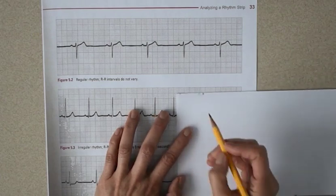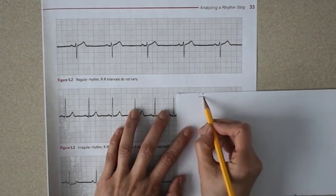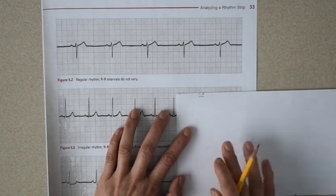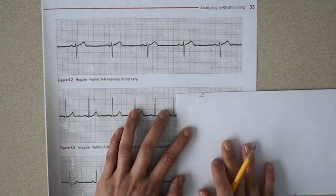And same with this one. So in this case this is the distance or the variation in the RR interval for this strip.